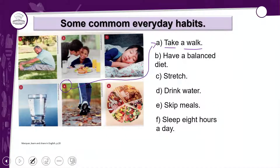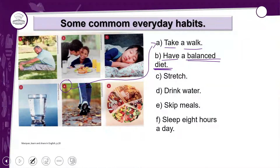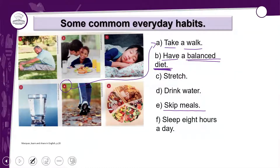Letra B: 'Have a balanced diet' — ter uma dieta balanceada. Temos duas imagens sobre comida. A letra E tem 'skip meals' — pular refeições. 'Meal' significa refeições. A palavra 'skip' vocês podem ter visto no YouTube quando o celular está configurado em inglês, no sentido de pular/avançar.